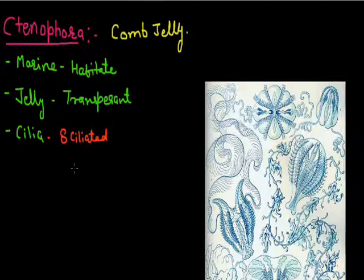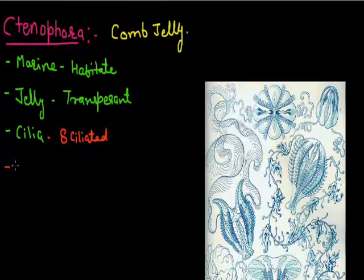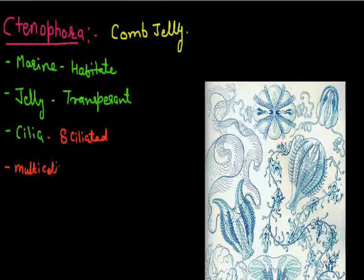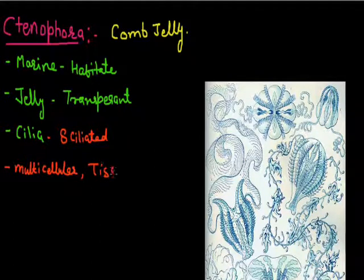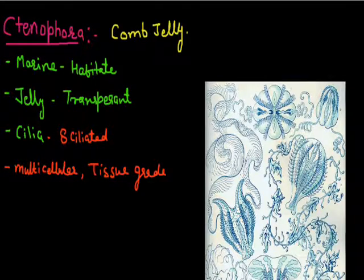These cilia are used for locomotion. These animals are the largest animals that use cilia for locomotion. They are multicellular in their structure. They have a tissue grade level of organization. These animals are triploblastic, meaning they have three germ layers.